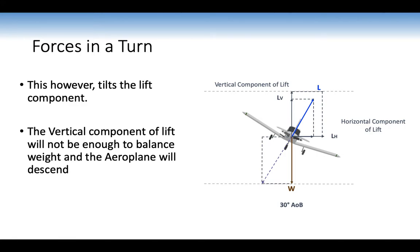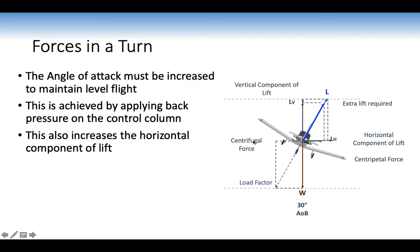The aeroplane will also start to slip. To maintain level flight, the angle of attack must be increased by applying back pressure on the control column. This is achieved using bank, balance, back pressure — which provides the necessary increase in lift and also increases the horizontal component of lift, which is the centripetal force. As a consequence, centrifugal force and load factor also increase.